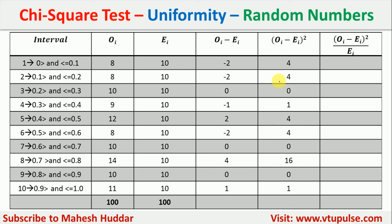Next, we calculate (OI − EI)² divided by EI for each interval: 4 ÷ 10 = 0.4, 4 ÷ 10 = 0.4, 0 ÷ 10 = 0, and so on. Taking the summation over all intervals gives us the chi-square value. The answer we get is 3.4 — this is the calculated chi-square value.